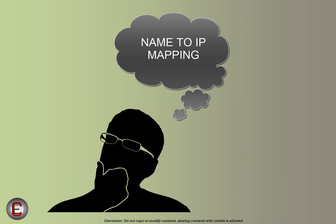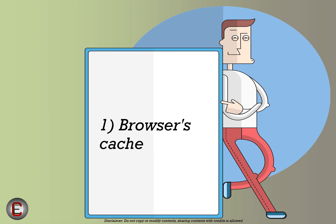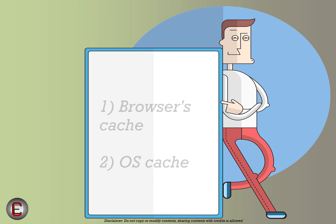Now let's picturize the whole concept of name-to-IP mapping and how this happens in the background. You type facebook.com in your web browser and it all begins. The first place the web browser checks is its own browser cache — anything it remembers from previous searches. In our example we are trying facebook.com for the first time, so no old information is present. Next, the browser looks for the name-to-IP mapping in the operating system's DNS cache, and it won't find it there either because this is the first time.